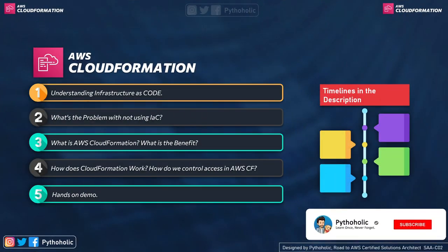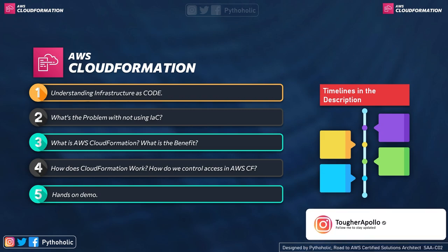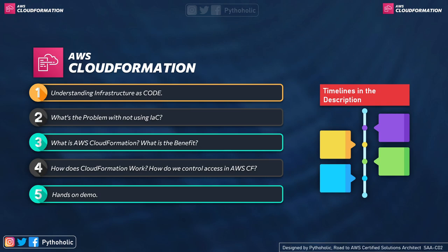In today's session we'll talk about infrastructure as code and why it's so important and in demand right now. We'll see why primitive deployment strategies are being overtaken by IaC. We'll also cover what AWS CloudFormation is, its benefits, how it works, how to control access in CloudFormation, and we'll do a small hands-on demo.